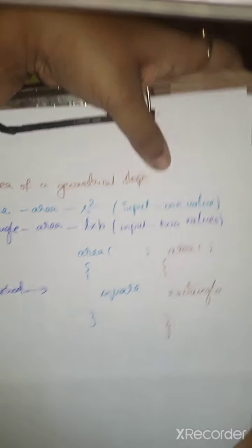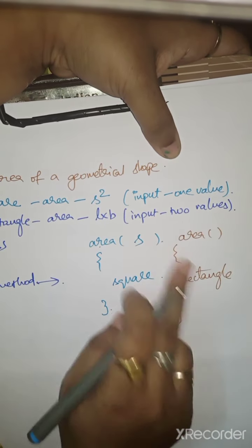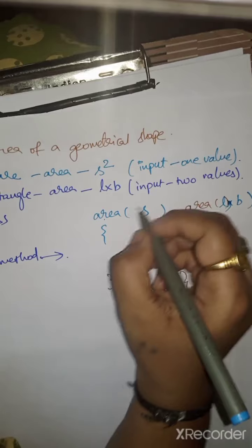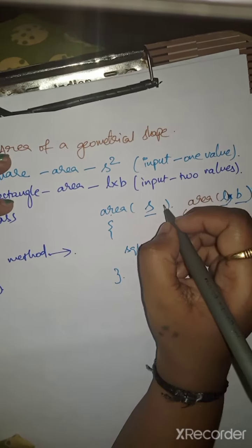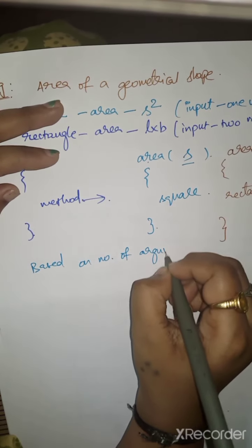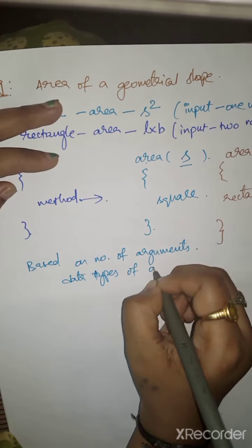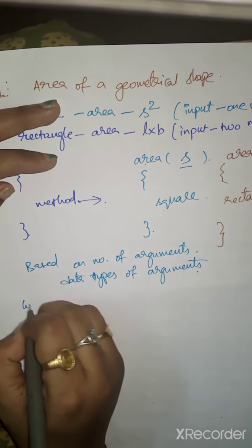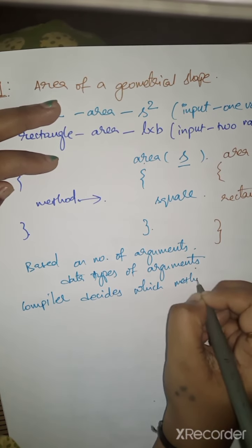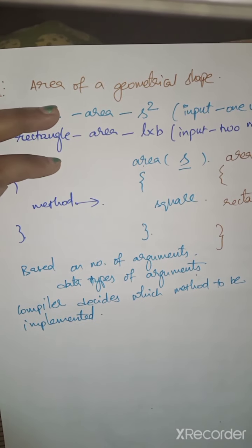For square, the formula is S squared, so the input will be S. For rectangle, the input will be length and breadth. Based on the number of arguments and data types of arguments, the compiler decides which method to be implemented.